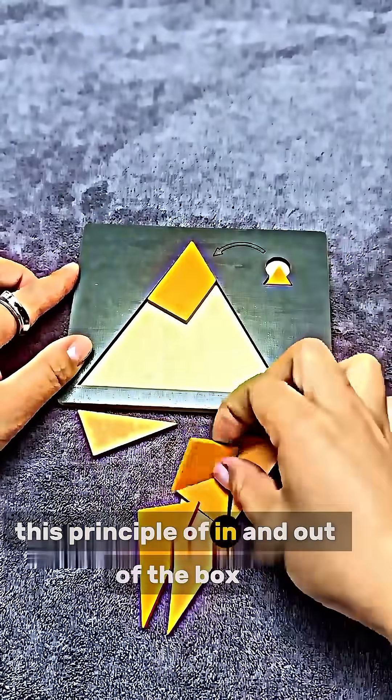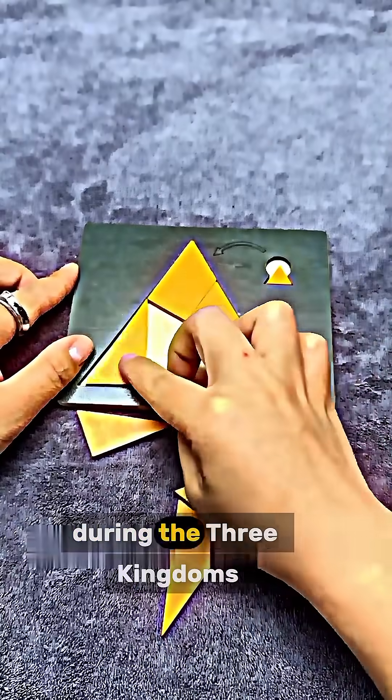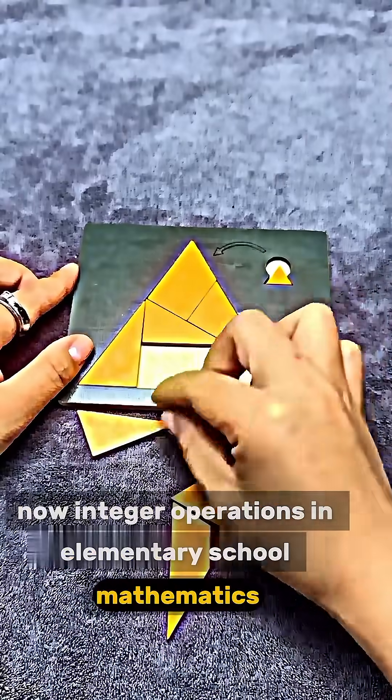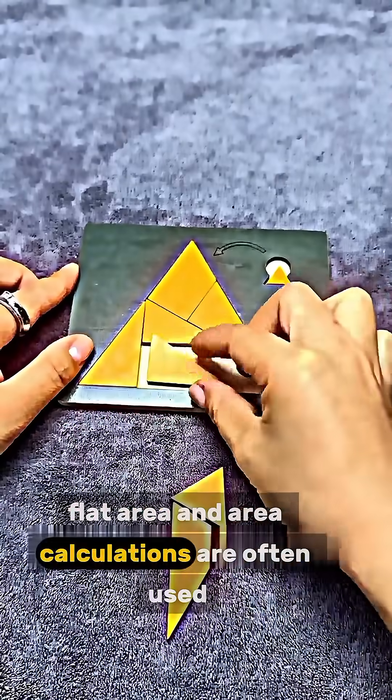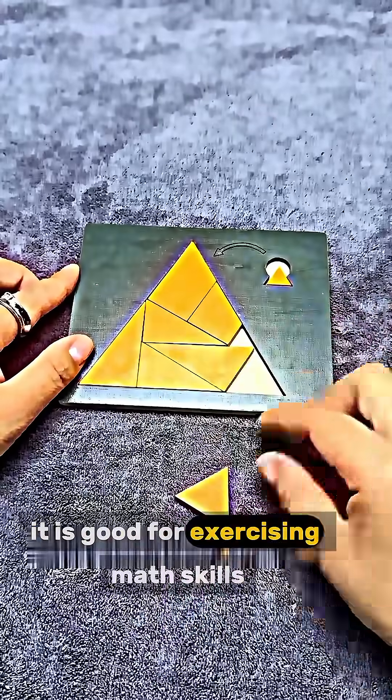This principle of in and out of the box was put forward by Liu Hui, a mathematician for the country during the Three Kingdoms. Now integer operations in elementary school mathematics, flat area and area calculations often use this. So let the kids play with jigsaw puzzles. It is good for exercising math skills.